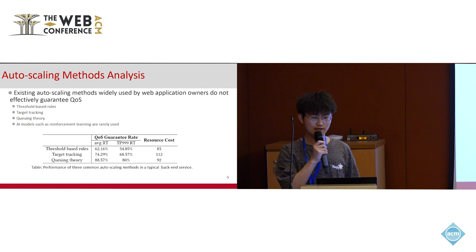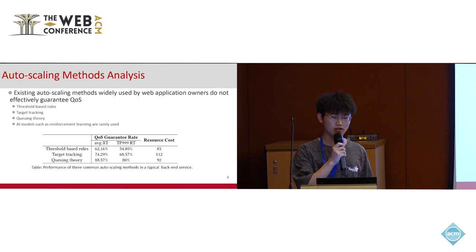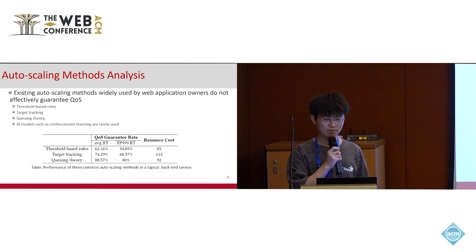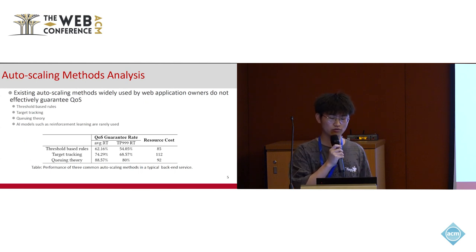We also tested existing auto-scaling methods. The commonly used methods in the industry include threshold-based rules, target tracking, and queuing theory. AI models, such as reinforcement learning, are rarely used because they may produce behaviors that violate QoS, which is unacceptable to application owners. We tested the three common auto-scaling methods using a typical backend service and found that they were not effective in guaranteeing QoS, especially when it came to tail latency.